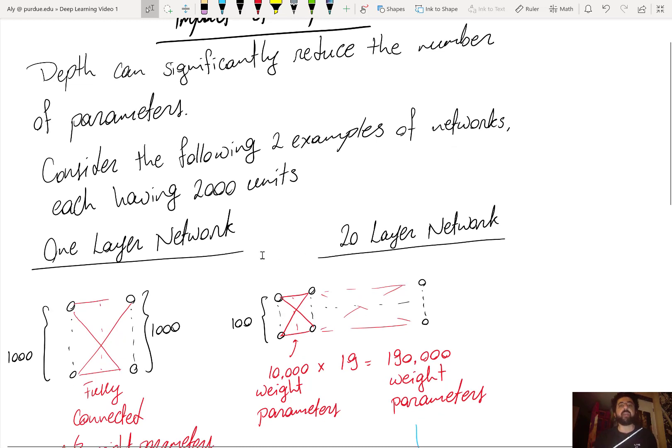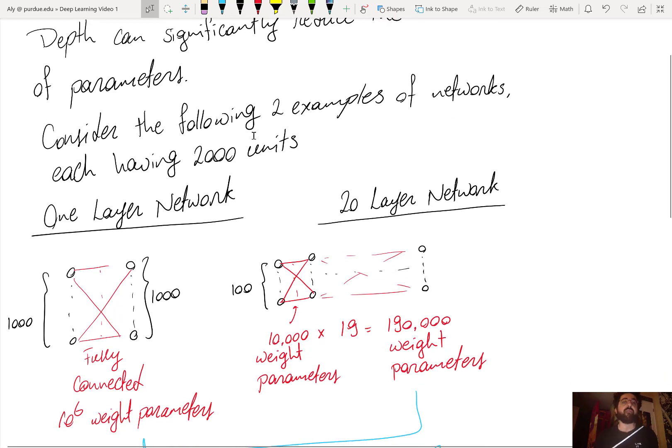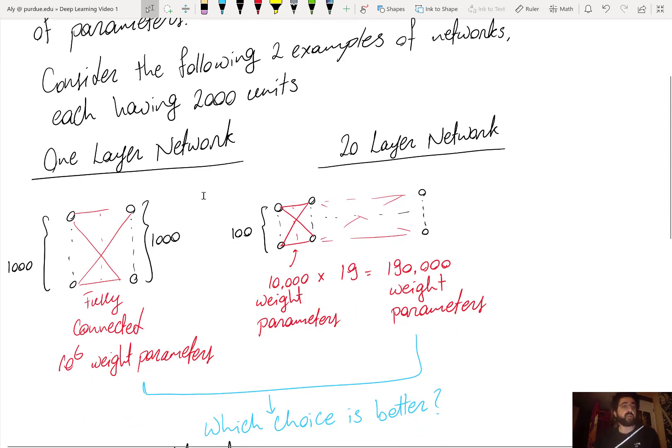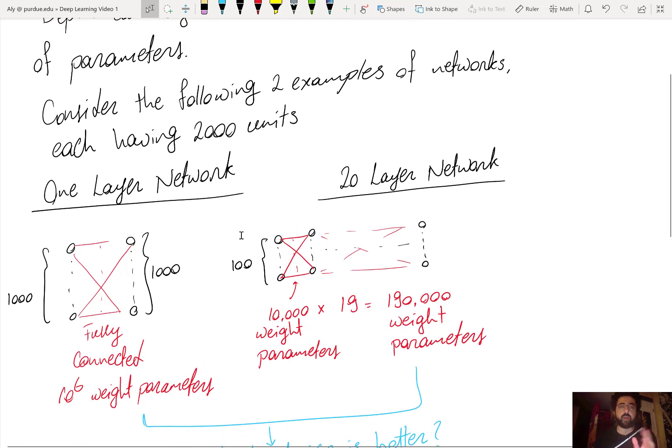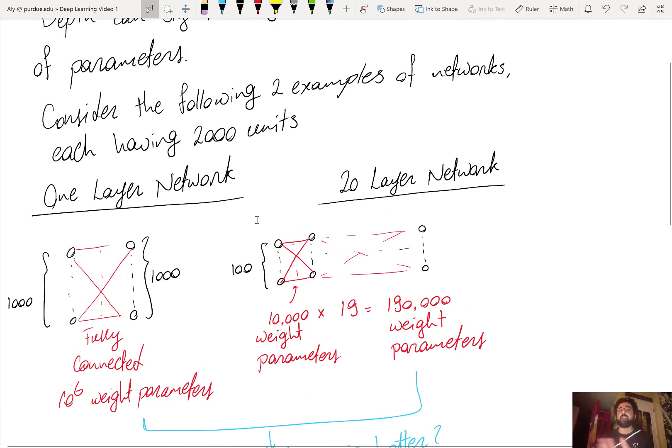So for example, take the following two examples of networks, each having 2,000 neurons or 2,000 units. The first one has only a one-layer network. Now, before I get into this discussion, let's remember from the last video the universal approximation theorem that says that in theory, all I need is one layer with nonlinear activations to approximate any function.